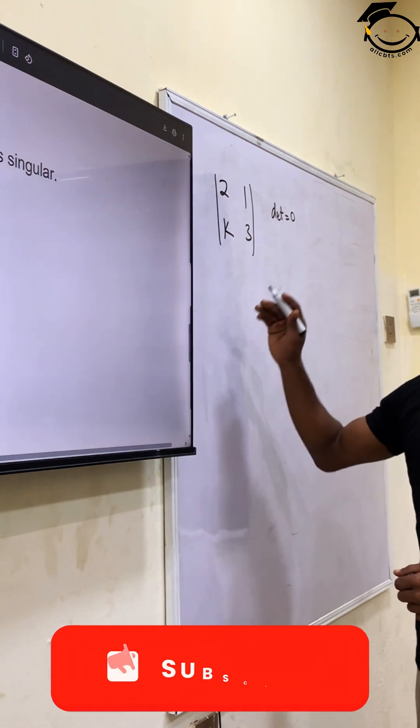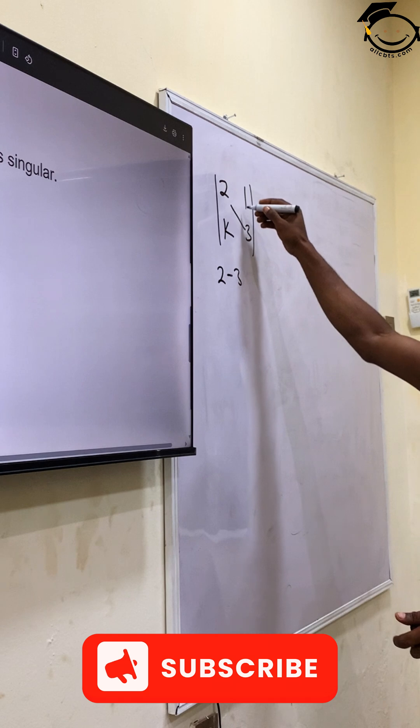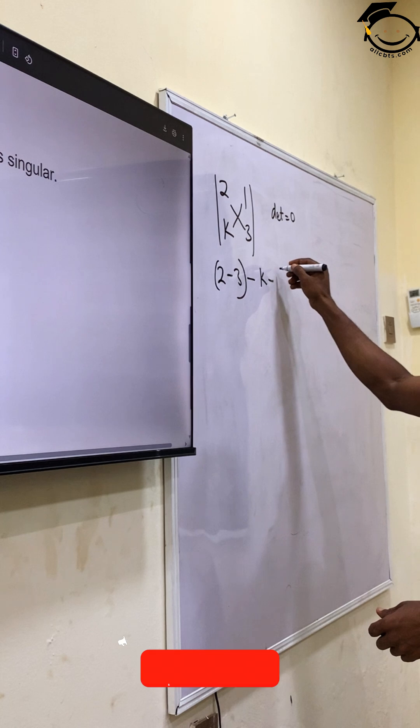zero. And in order to find that determinant, we have 2 times 3 on the diagonal minus k times 1.